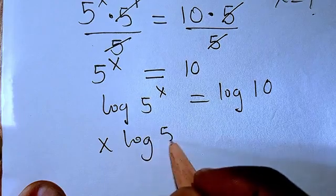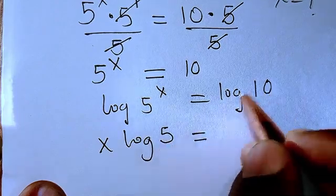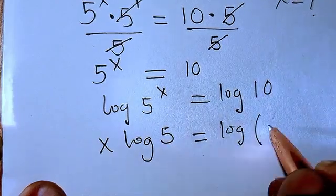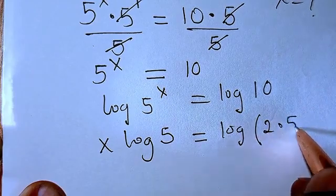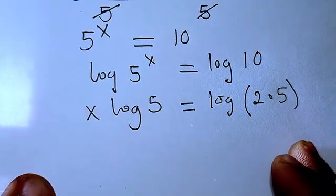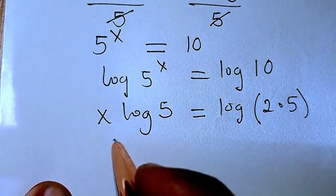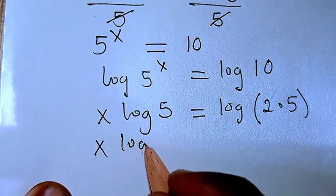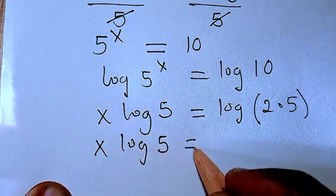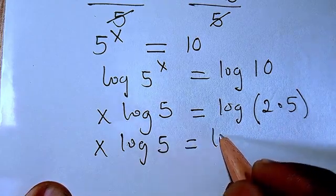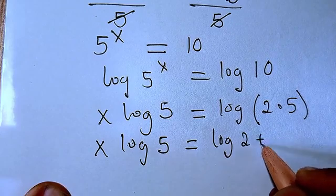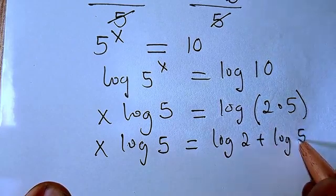So now from there I'm going to have x log 5 equals, this can be log 2 plus log 5. That is from the law of logarithms.